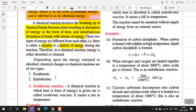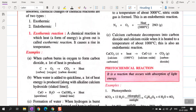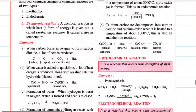Depending upon the energy released or absorbed, chemical reactions are of two types: exothermic and endothermic. Exothermic reactions release energy in the form of heat, light, or any other form. Example: when carbon burns in the presence of oxygen, carbon dioxide is produced along with a lot of heat. When water is added to quick lime CaO, a lot of heat energy is produced along with calcium hydroxide (slaked lime).